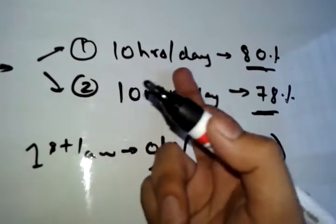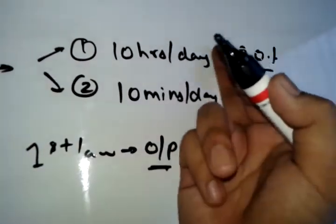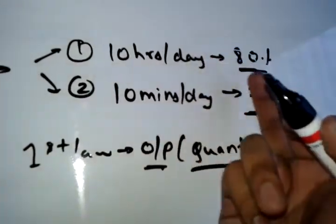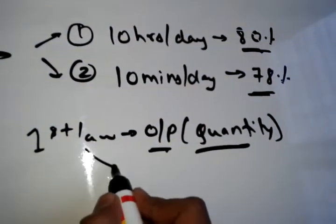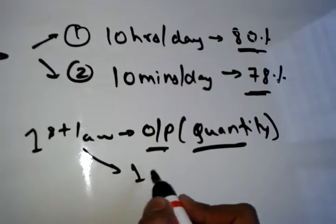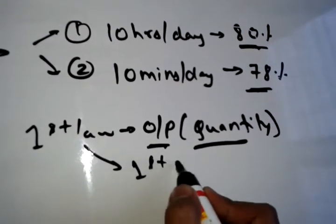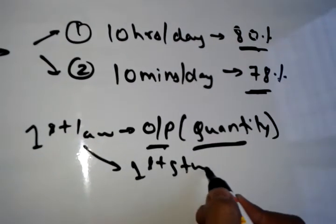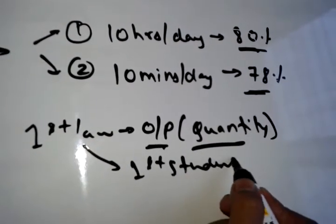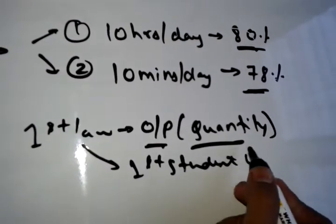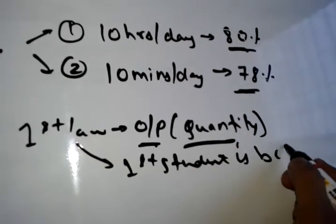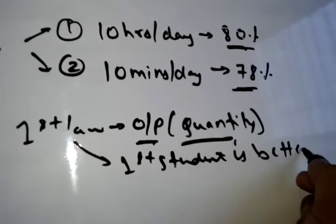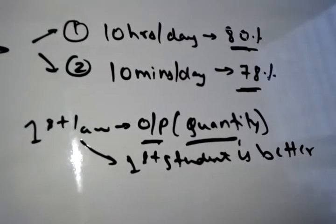So the first law will see output. The first student scores 80% and the second student scores 78%. It only sees the output, and according to that, the first student is better because the first law only sees quantity.